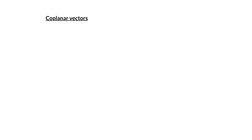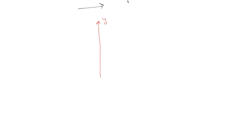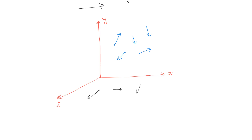The next term is coplanar vectors, which means vectors that lie in the same plane. For example, taking this screen as a plane, all vectors drawn on it are coplanar. Similarly, vectors in the x-y plane are coplanar, and vectors in the y-z plane are coplanar. They may have different magnitudes or directions, but they must be in the same plane.